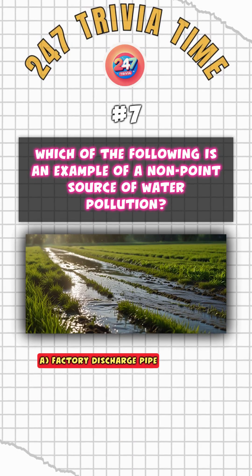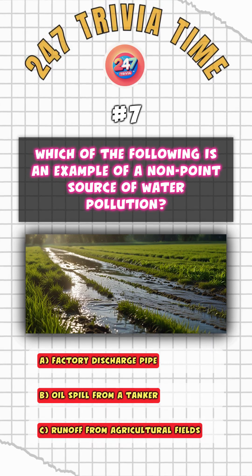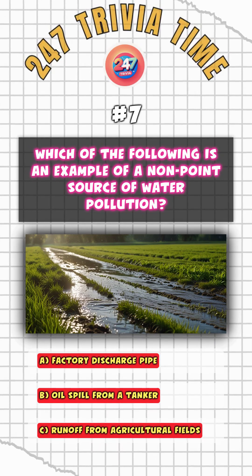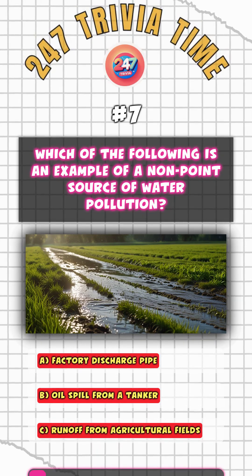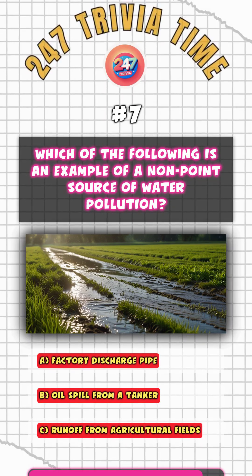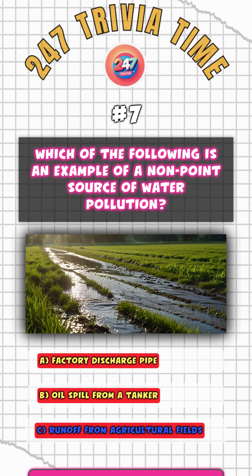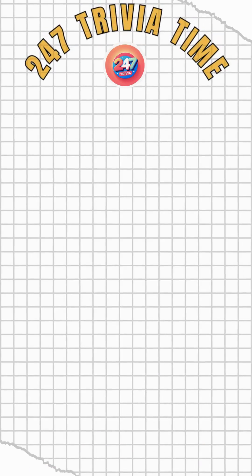Which of the following is an example of a non-point source of water pollution? C. Runoff from agricultural fields.